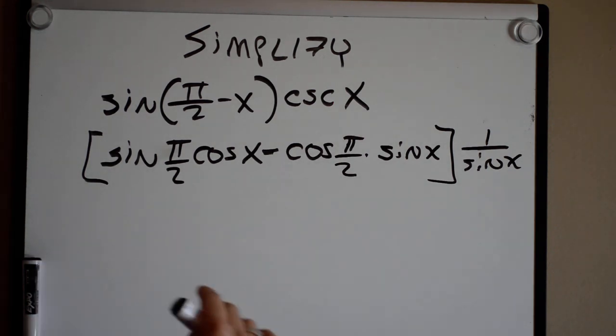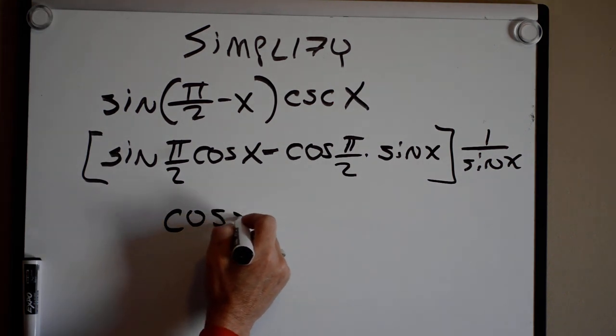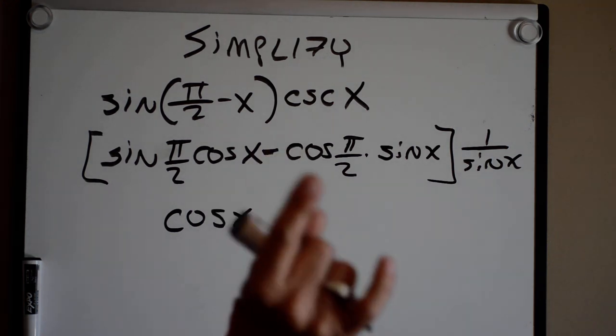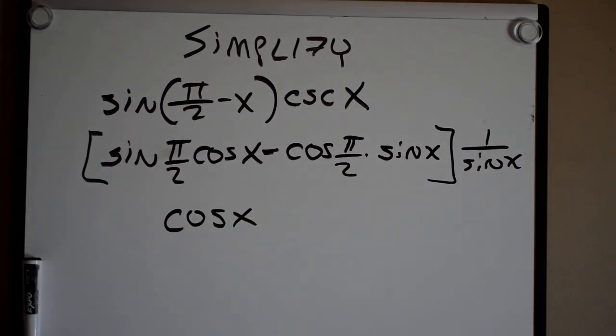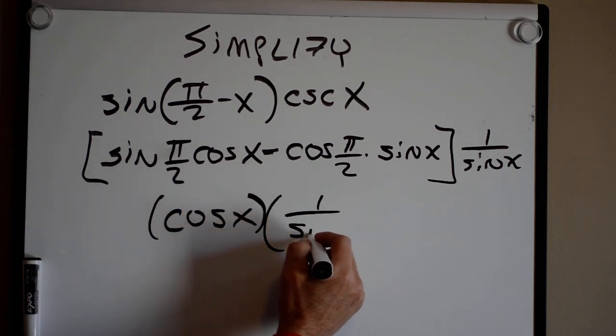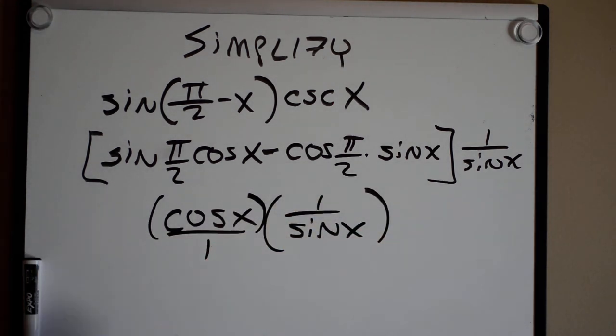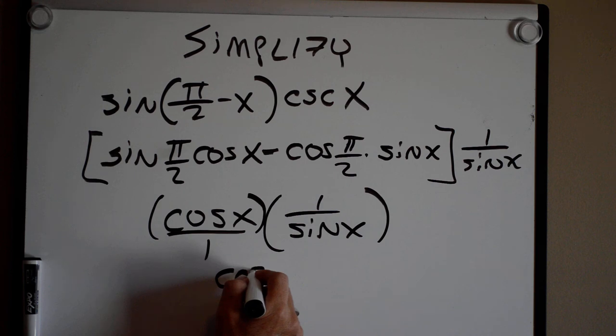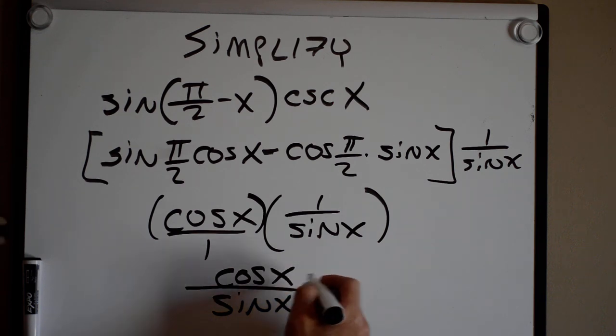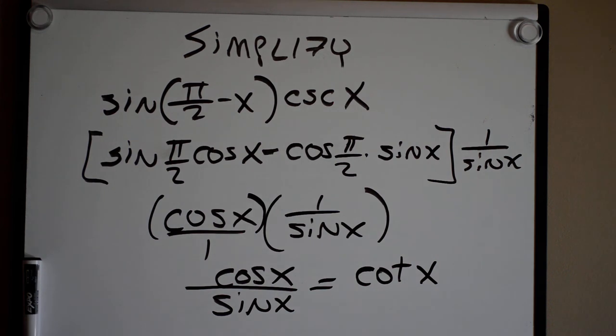So I come inside here. What is the sine of pi over 2? You're right, it's 1. So it's 1 times the cosine of x, which is just the cosine of x. What is the cosine of pi over 2? 0. 0 times sine of x is just 0. So this is just cosine of x times 1 over the sine of x. Multiplying, that gives you cosine of x over the sine of x, which is equal to cotangent of x.